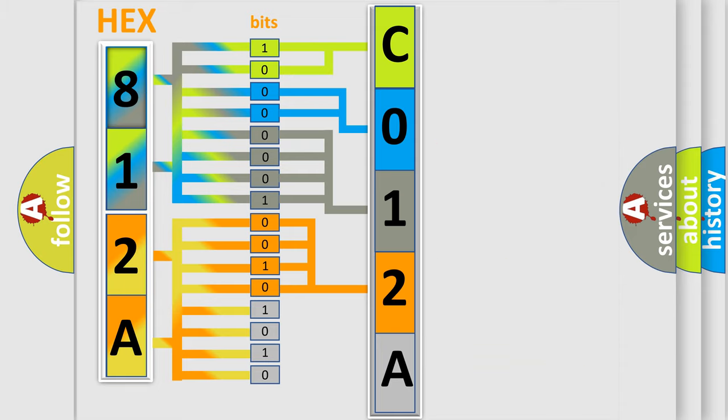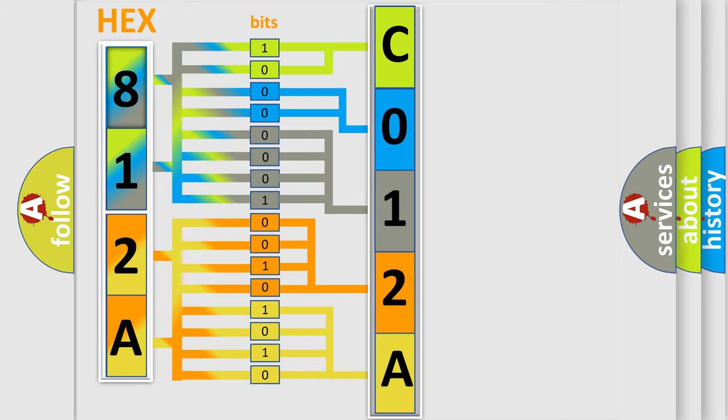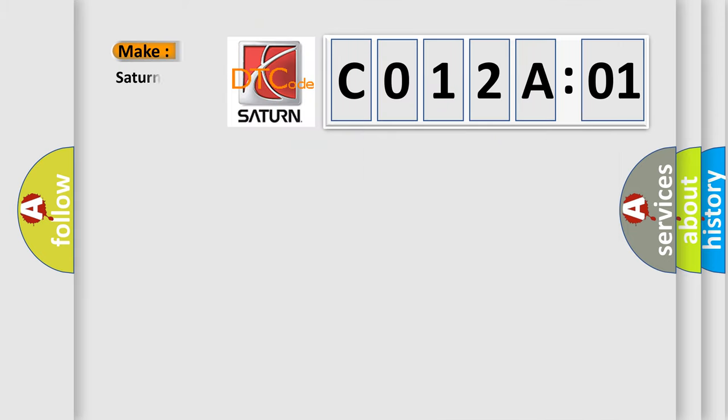A single byte conceals 256 possible combinations. We now know in what way the diagnostic tool translates the received information into a more comprehensible format. The number itself does not make sense to us if we cannot assign information about what it actually expresses. So, what does the diagnostic trouble code C012A01 interpret specifically for Saturn car manufacturers?